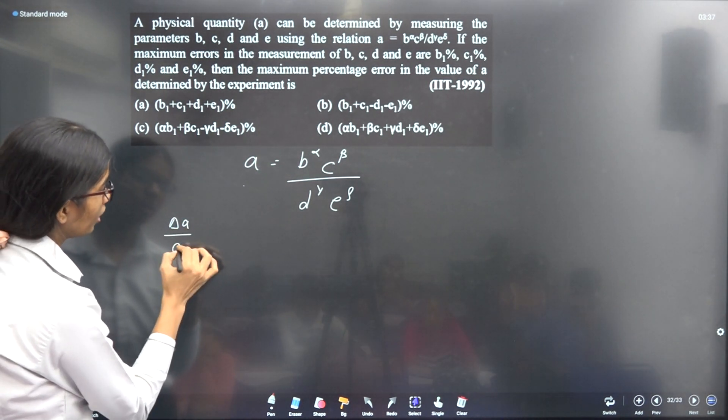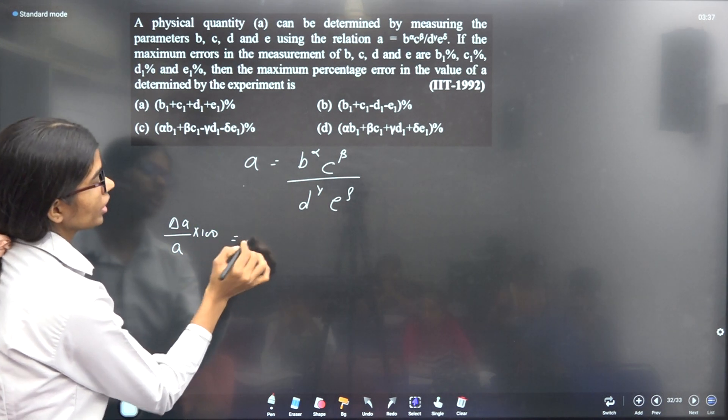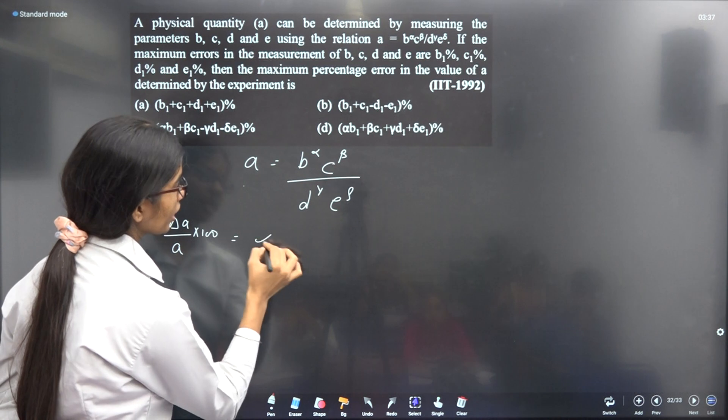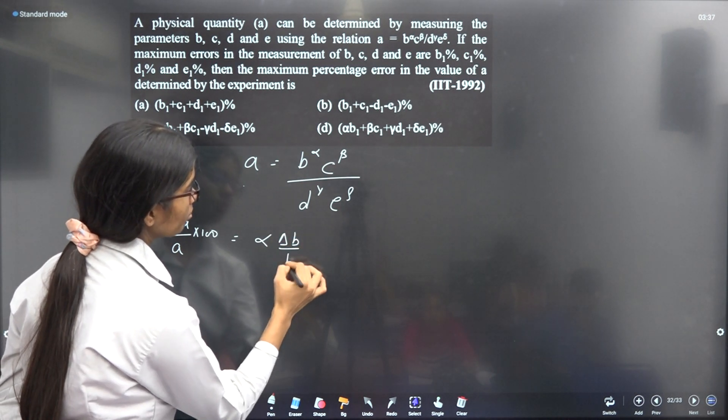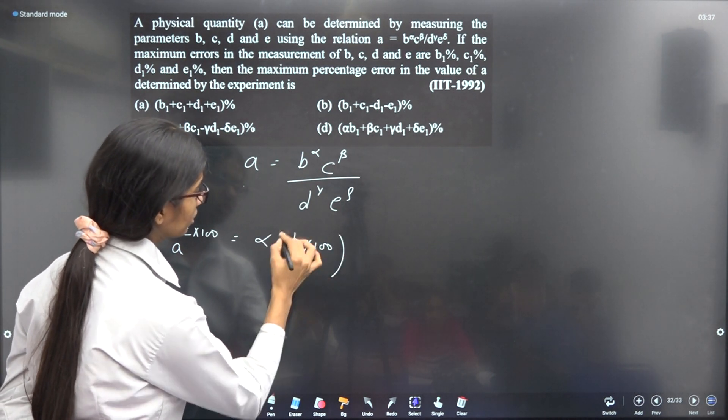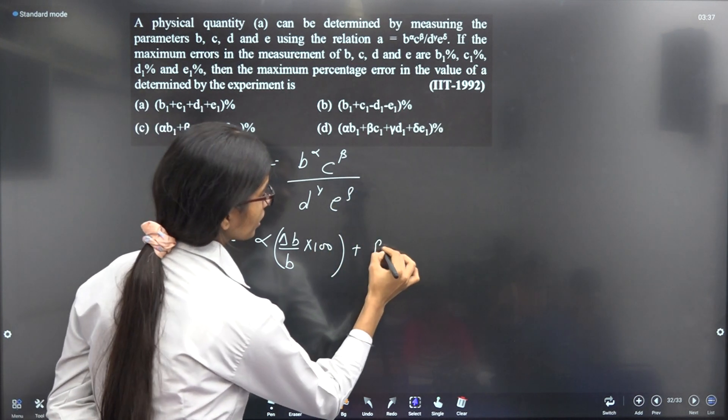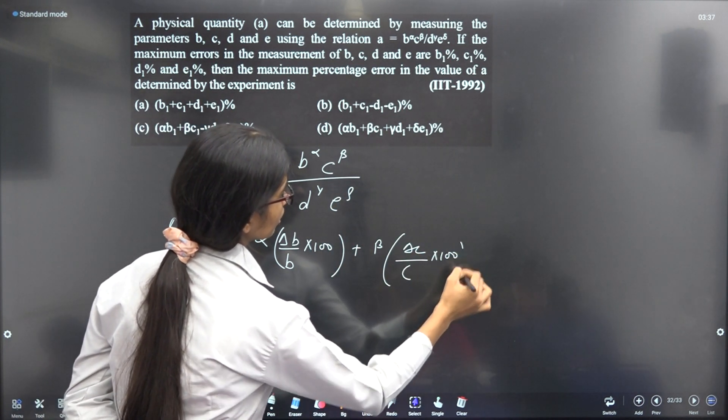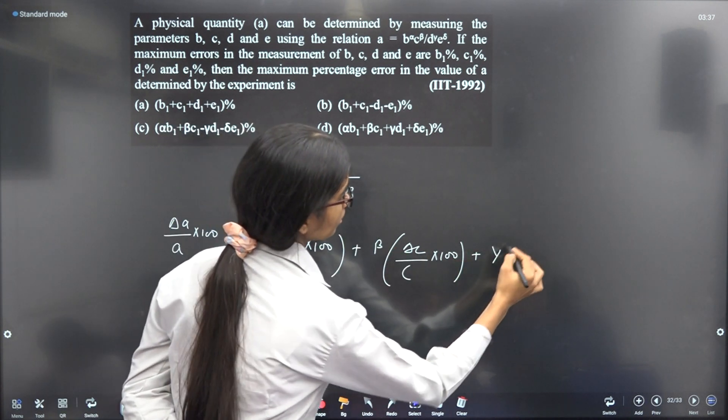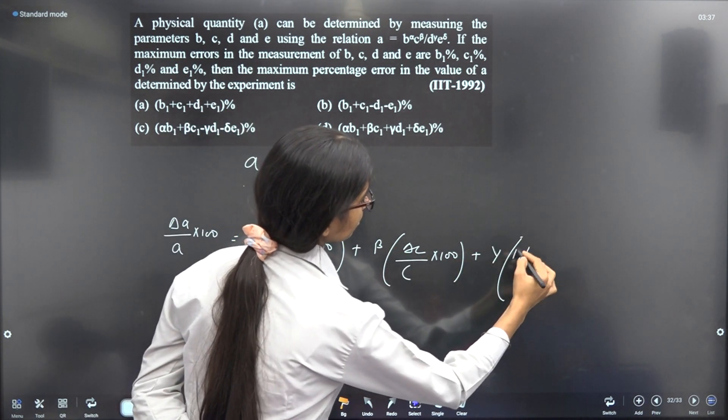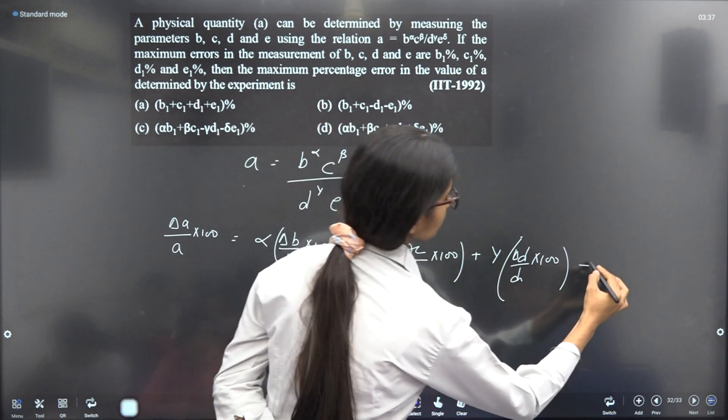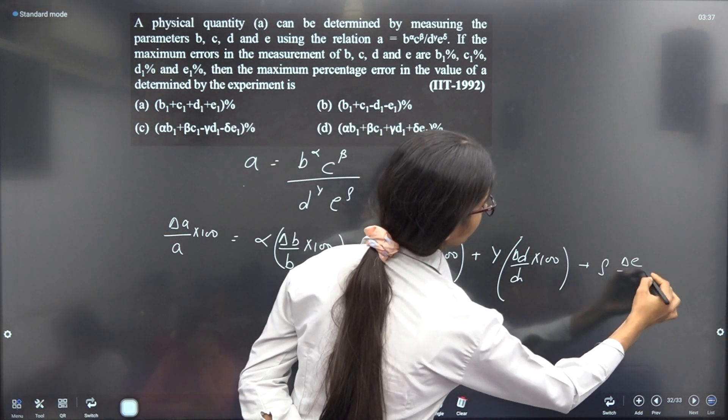So for this equation, ΔA/A × 100 (percentage error in A) equals α(ΔB/B × 100) plus β(ΔC/C × 100) plus γ(ΔD/D × 100) plus ρ(ΔE/E × 100).